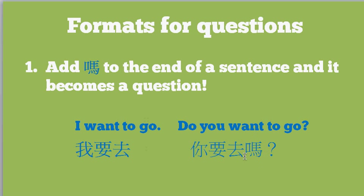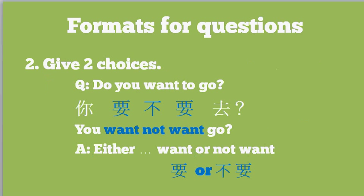The simplest way to make a question in Chinese is to take any sentence and add 'ma' — this little character — to the end, and that makes it a question. So if I say 'you want go' as a statement, 'you want go ma' means 'do you want to go?' As soon as you put 'ma' at the end, it becomes a question.